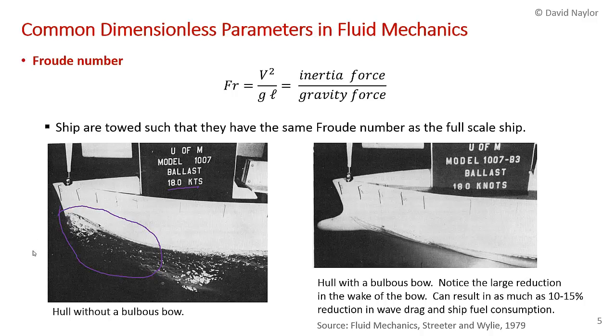And then this is running at the same 18 knots, the same ship with the same gravity, so we'd have the same Froude number, but now with a bulbous hull at the front. You can really see the greatly reduced wave that comes off the bow. This can result in as much as a 10 to 15% reduction in the drag on the boat and reduction in fuel consumption. If you were testing a boat in a small scale model, you'd run the model at the same Froude number as the full scale ship to predict the drag on the hull.